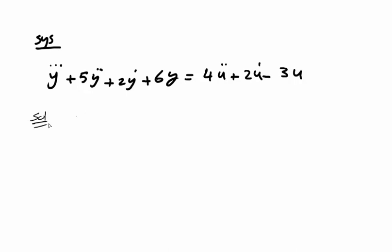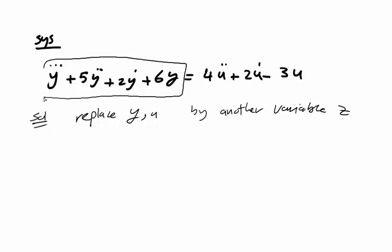For example, z. Take the left hand side and replace it by z: z triple dot plus 5z double dot plus 2z dot plus 6z equals u. This is the first equation.